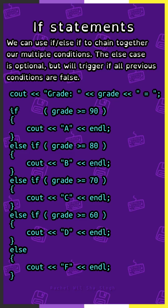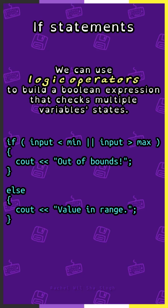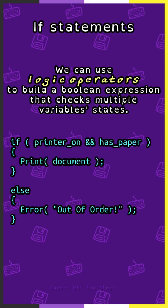Else, output F. We can use logic operators to build a Boolean expression that checks multiple variable states. Such as: if input is less than min or input is greater than max, then output 'out of bounds.' Or: if printer is on and has paper, then print document.